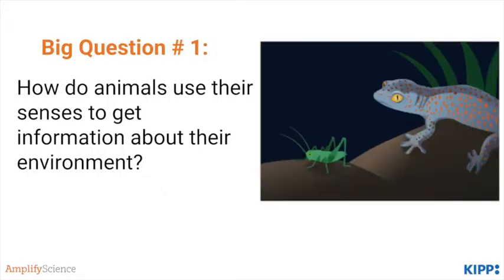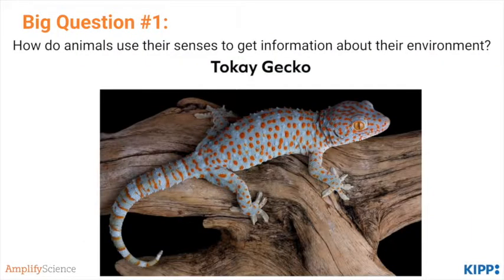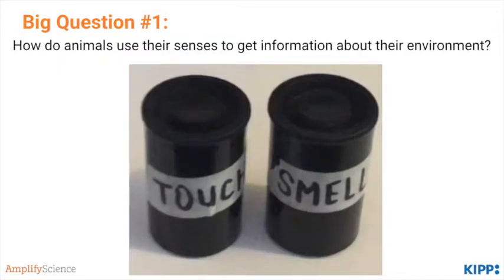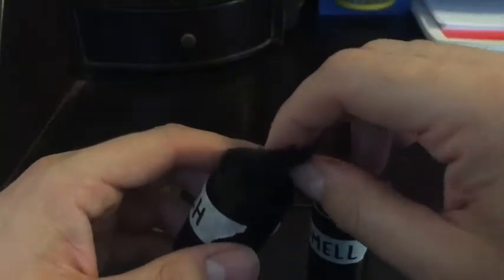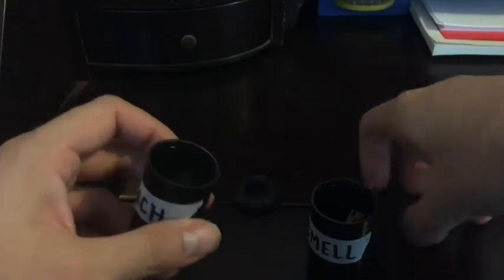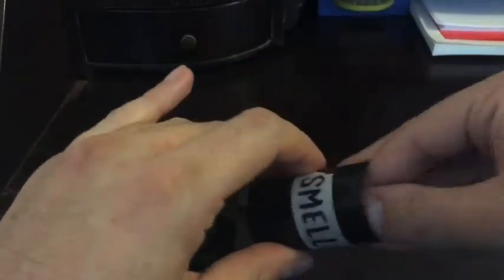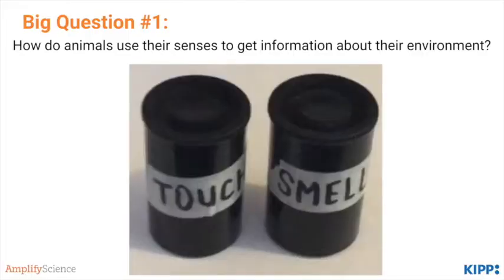Let's go ahead and dive into the chapters. Our first big question is: how do animals use their senses to get information about their environment? We start by introducing the tokay gecko and the unit problem to students. Students are challenged to identify different materials based upon one sense at a time, such as their sense of touch or their sense of smell. The materials are placed in film canisters and sealed — for example, a piece of fake fur and some sticks of cinnamon. Students are then challenged to use only that sense to identify the object and whether it would be helpful for their survival.